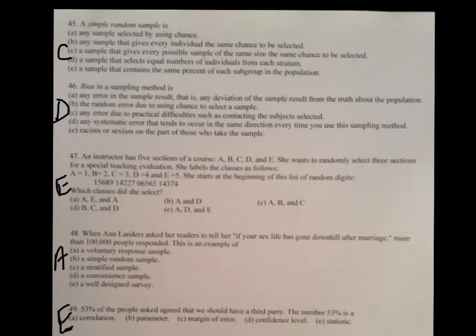On number 44, in a table of random digits, the answer choice is B. Any pair of entries is equally likely to be any of the 100 possible pairs. Remember, 00 through 99, each one of those numbers has the exact same chance as any other two-digit number. Now, on number 45, a simple random sample. In the beginning, when I first looked at this, I thought B might be the answer. Any sample that gives every individual the same chance. Well, that's not really true. Yes, it gives every individual the same chance. But what's more accurate is a sample that gives every possible sample of the same size the same chance. So every possible combination gets the same chance to be selected. And that's the definition in the textbook. So bias is any systematic error that tends to occur in the same direction every time you use the sampling method.